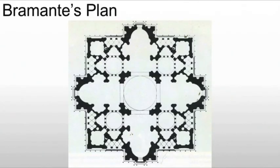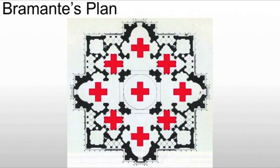We get Bramante involved. Donato Bramante originally designed the structure in 1505. Looking at a floor plan, anything that's black is a wall or column, and anything that's a circle is a dome. We see a series of domes built throughout. There are actually nine crosses shown here, and those crosses are there symbolically — after all, Christ dies on the cross.